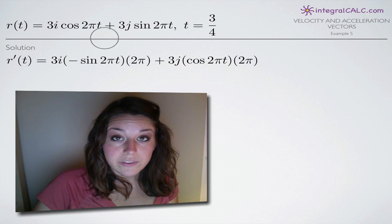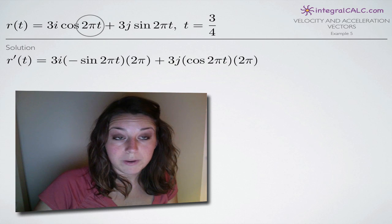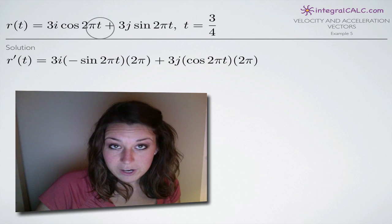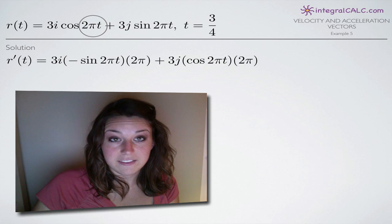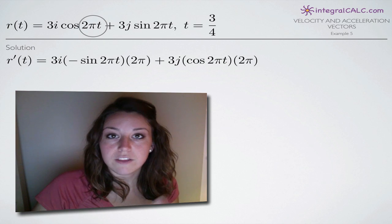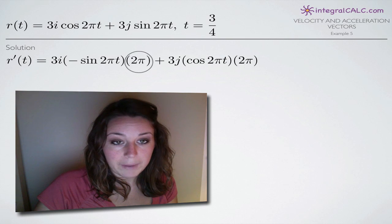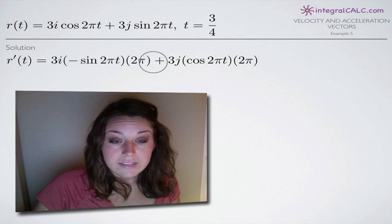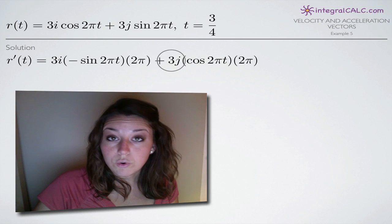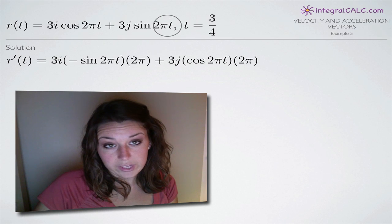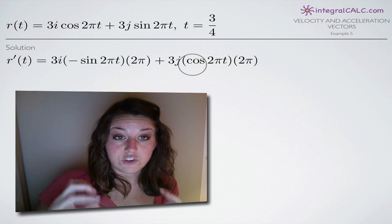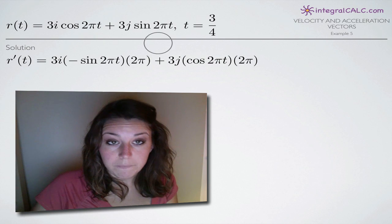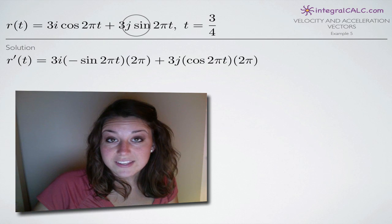Chain rule tells us we have to multiply by the derivative of the inside, which is 2 pi t. The derivative of 2 pi t is 2 pi — t is our variable, so 2 pi acts like a coefficient. It's the same as saying the derivative of 3t is 3, so the derivative of 2 pi t is 2 pi. We multiply by that 2 pi. Same thing with the second term: this 3j is like a coefficient, and using chain rule, we take the derivative of the outside function sine, leaving the inside alone, then multiply by the derivative of the inside.